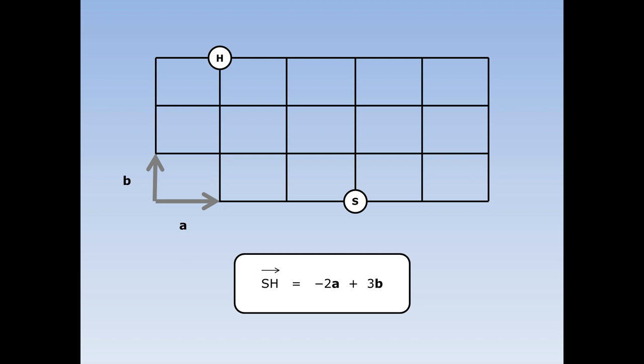As usual, it doesn't matter which direction I go. I could have done a zigzag, or I could have started by going up to the top and then along. All of the answers would have been the same. How do I get from the bakers to the railway station? I need to go the wrong way along three A roads and then the wrong way down two B roads, so the answer is minus three A minus two B.